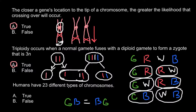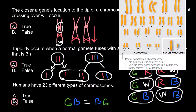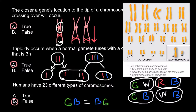Next statement: humans have 23 different types of chromosomes — is it true or false? This time it is false. If you take a closer look at a karyotype picture, you would see 23 pairs of chromosomes, but 22 of them are homologous pairs and the X and Y chromosomes are not the same. So we have 22 autosome types plus X and Y — that is 24 different types of chromosomes. That's why this statement is false.